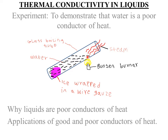Water is heated at the top, then an observation is made. It is observed that when water is heated at the top, the ice inside, wrapped in the wire gauze, does not melt. This shows that water could not conduct heat from the top down to the bottom, which confirms that water is indeed a poor conductor of heat.